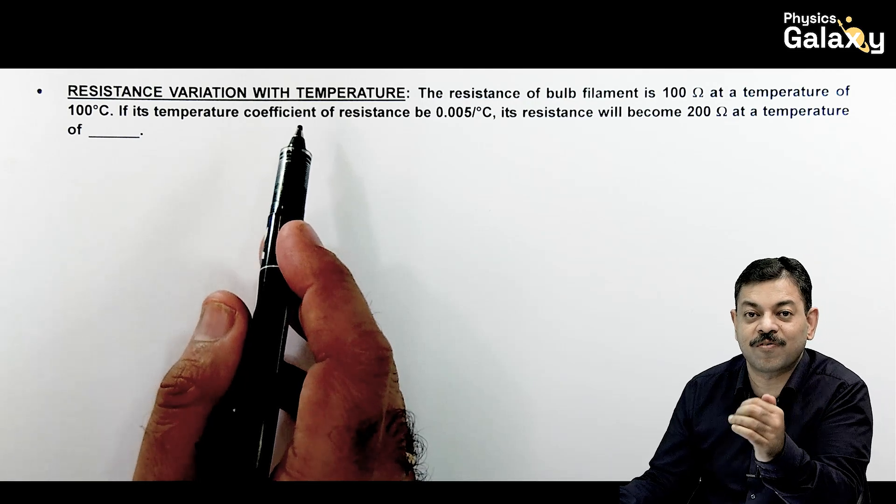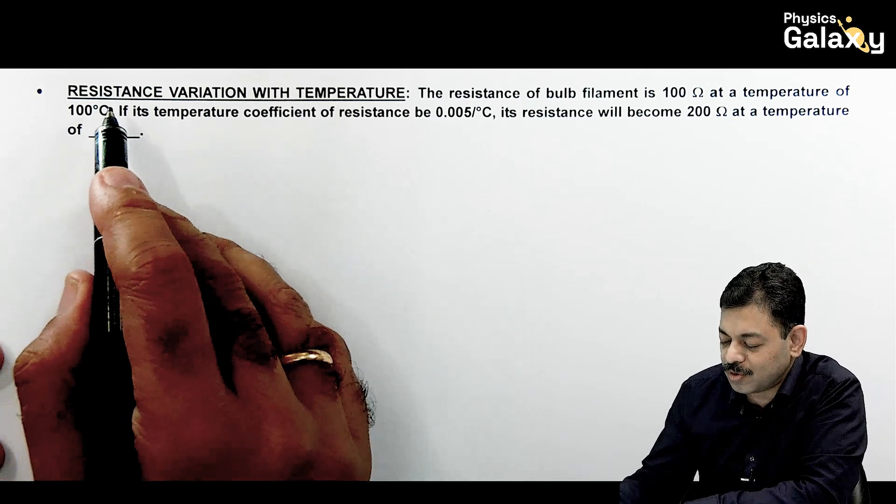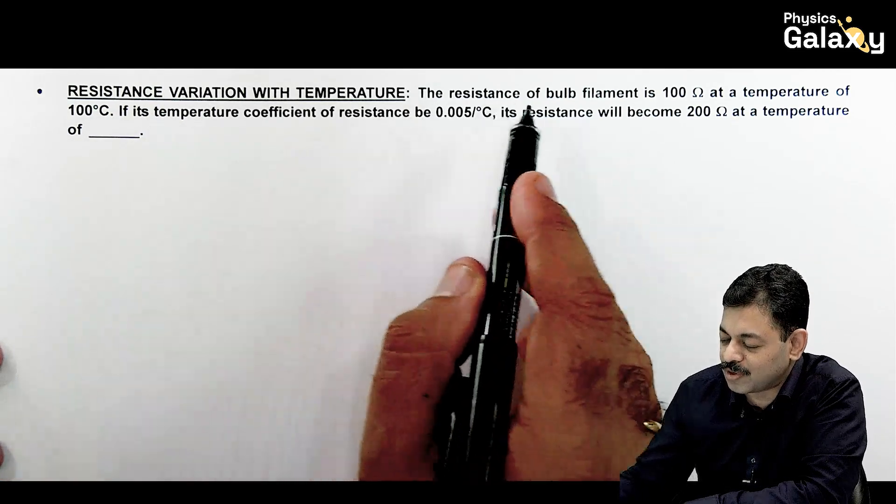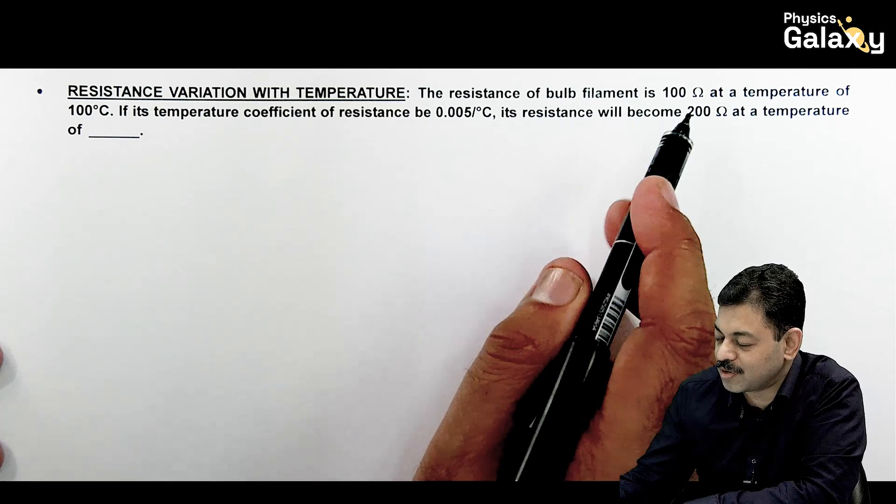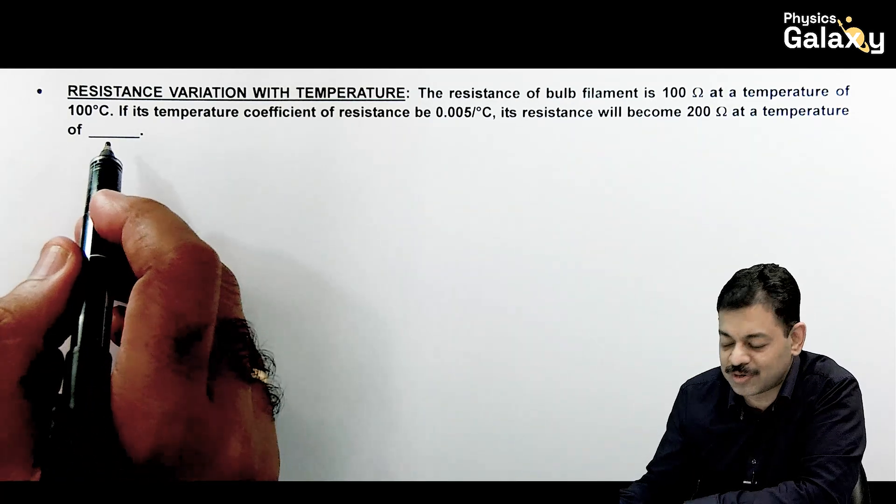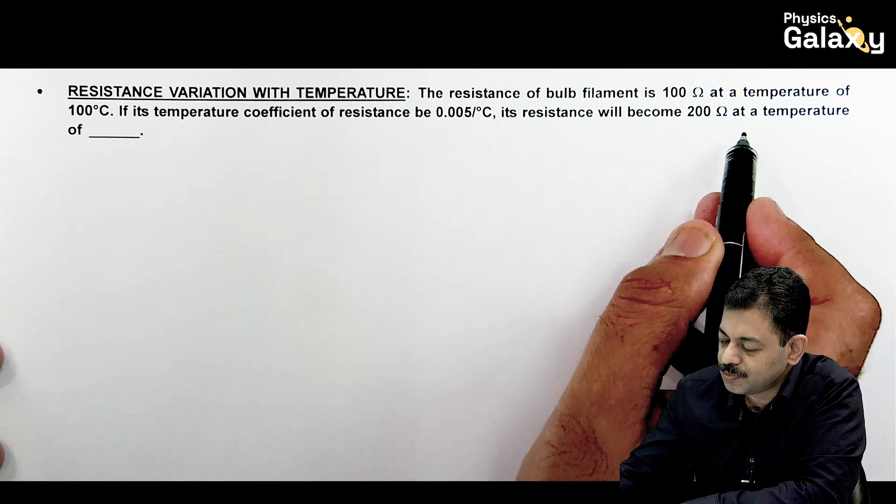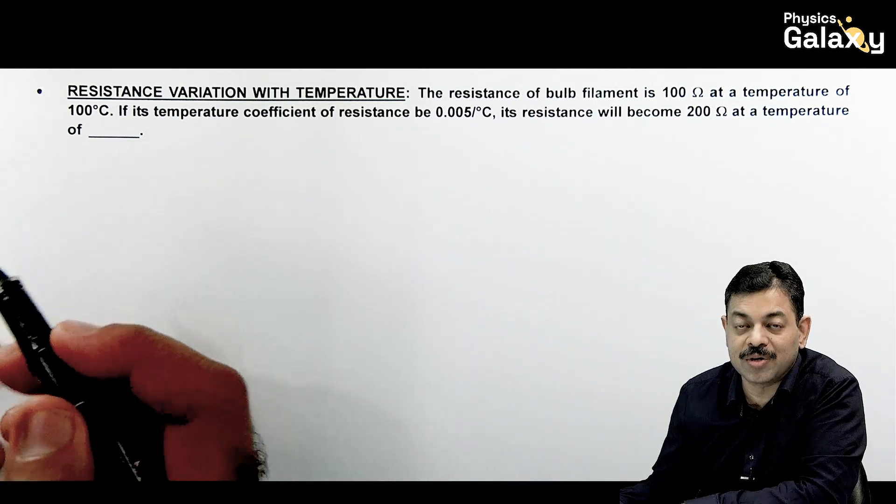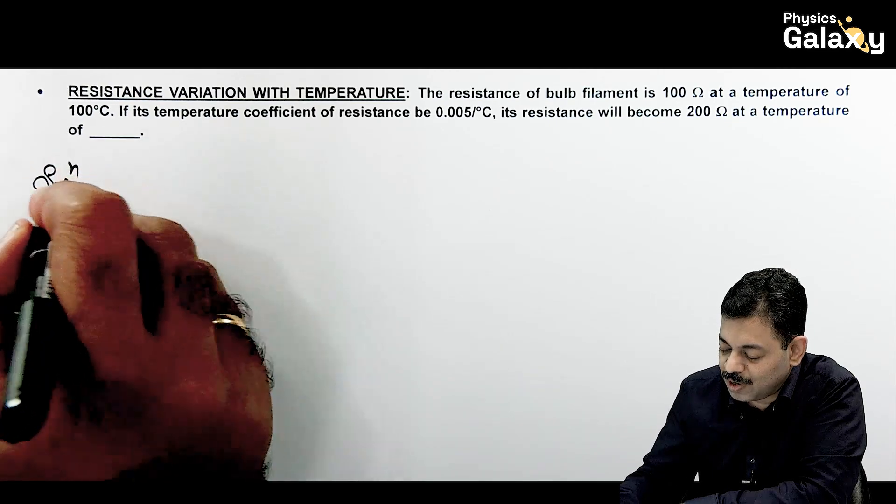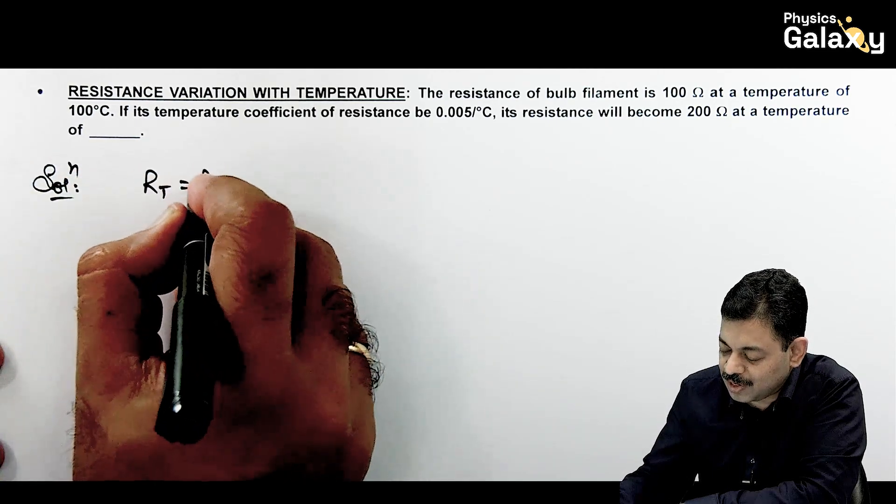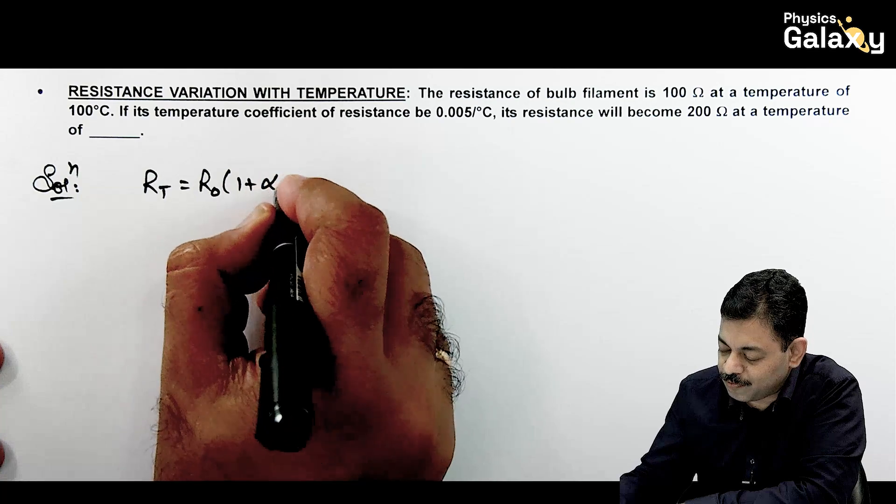Here we are talking about variation with temperature. It says the resistance of a bulb filament is 100 Ohm at a temperature of 100 degree centigrade. If its temperature coefficient be 0.005, at 200 Ohm, resistance temperature kya hona chahiye. Directly you know well, resistance at temperature T we write as R0 into 1 plus alpha T.